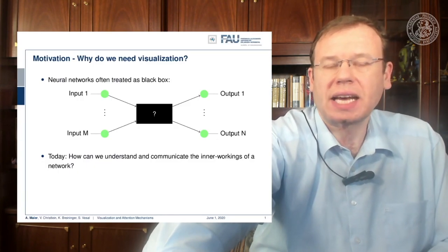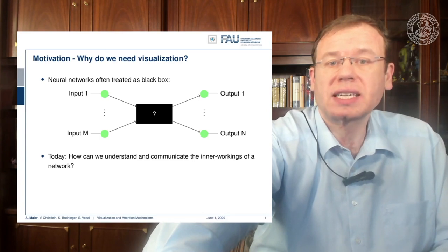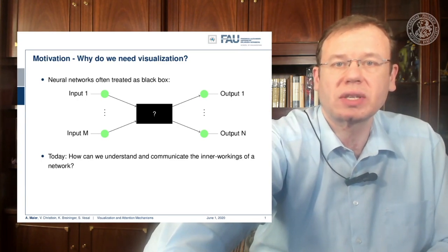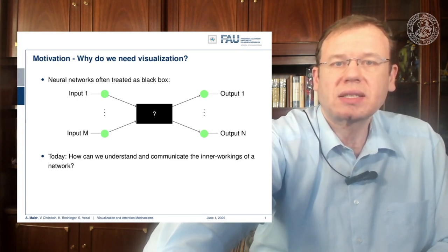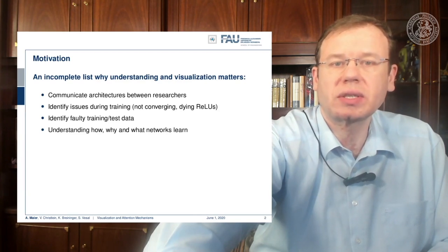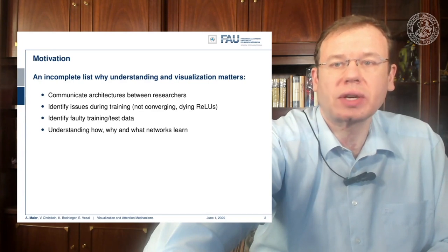Why do we want to visualize anything? Neural networks are often treated as black boxes — you have some inputs, something happens, and then there are outputs. Today we look into how to communicate the inner workings of a network to other people like developers and scientists. Reasons include communicating architectures, identifying issues during training like non-convergence or dying ReLUs, identifying faulty training or test data, and understanding what networks learn.